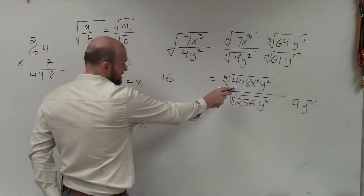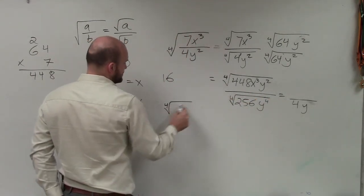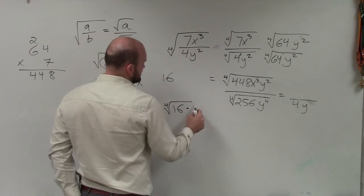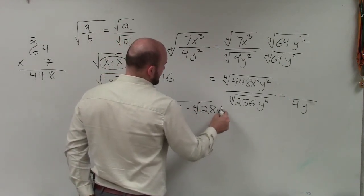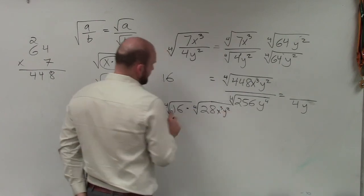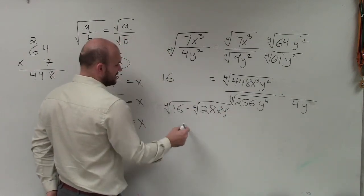So therefore, I can actually simplify this into the fourth root of 16 times the fourth root of 28 x cubed y squared. The fourth root of 16 is going to be 2.